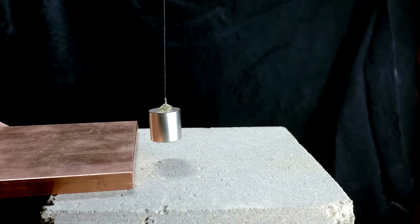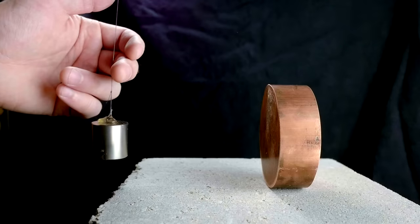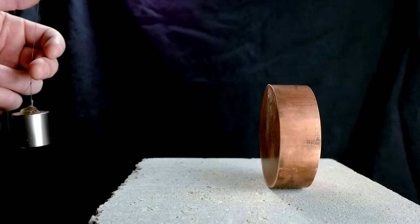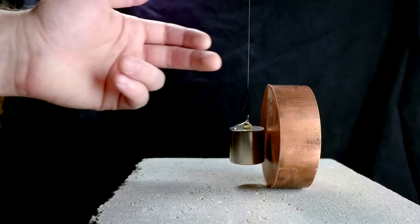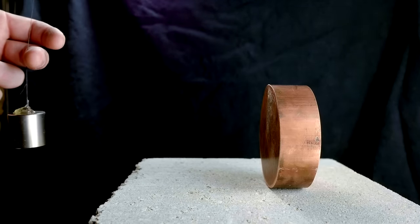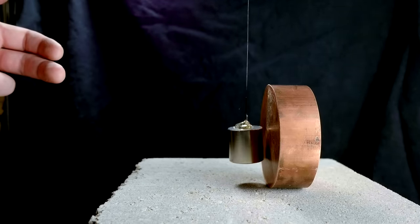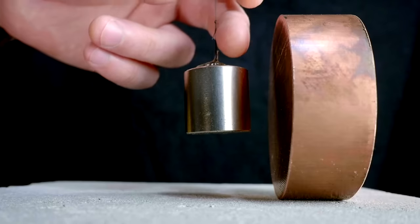My favorite tabletop demonstration of magnetic braking is to swing a magnet toward a chunk of copper like a wrecking ball. The magnet loses all of its momentum at the very last moment in a way that almost looks supernatural. It reminds me of a scene in the second Matrix movie where Neo stops bullets in mid-air.